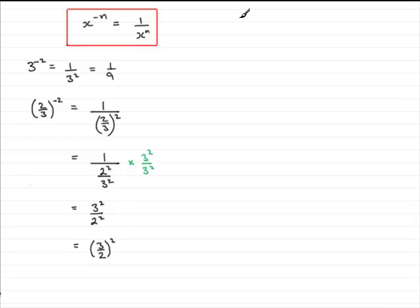That if you've got say a over b to the power minus n, all you need to do is turn the fraction upside down which is b over a, and then instead of having minus n just put n. So you can see when we had 2 thirds to minus 2, turn it upside down you get 3 over 2 and switch the sign on the power. So from minus 2 switch the sign to 2.